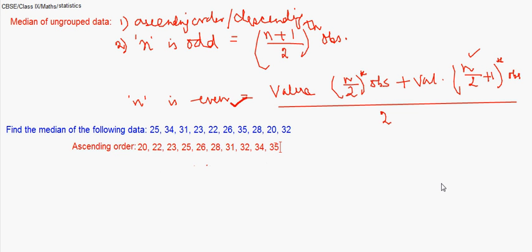I have noted it down in ascending order. Now I will be calculating it as n/2, the fifth observation and sixth observation. So it is (26 + 28)/2, that will give us 54/2, which equals 27.